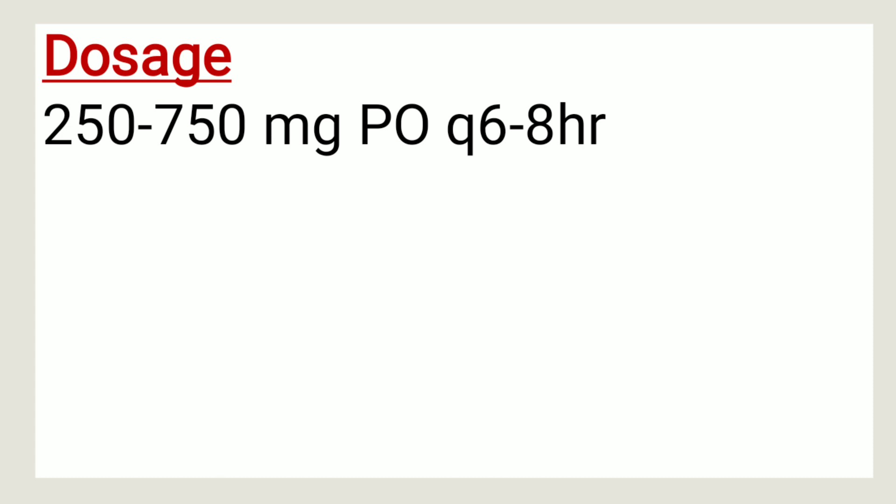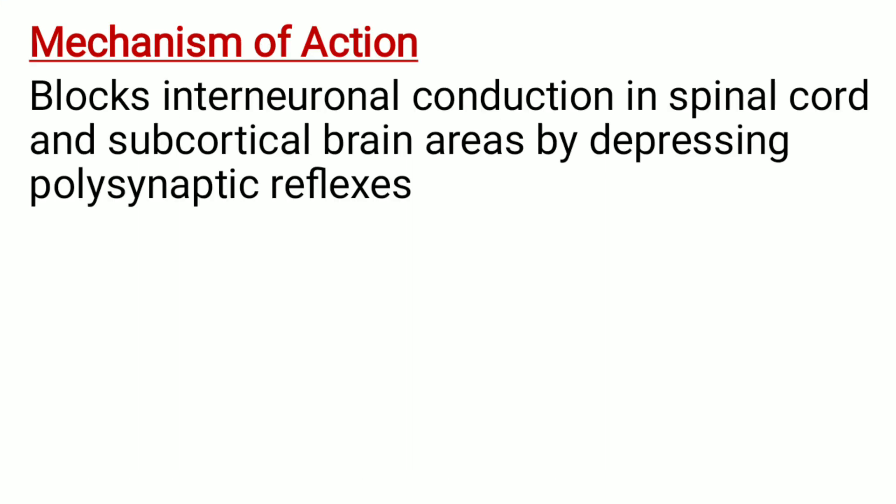The dosage: the adult dose is usually between 250 and 750 milligrams per oral every 6 to 8 hours. Mechanism of action: it blocks interneuronal conduction in the spinal cord and subcortical brain areas by depressing polysynaptic reflexes.